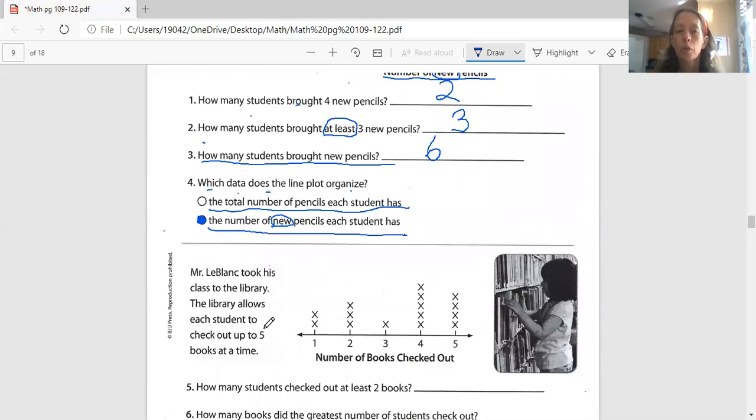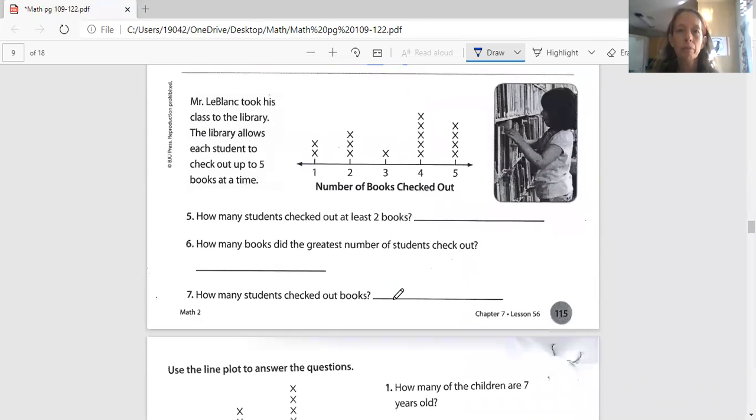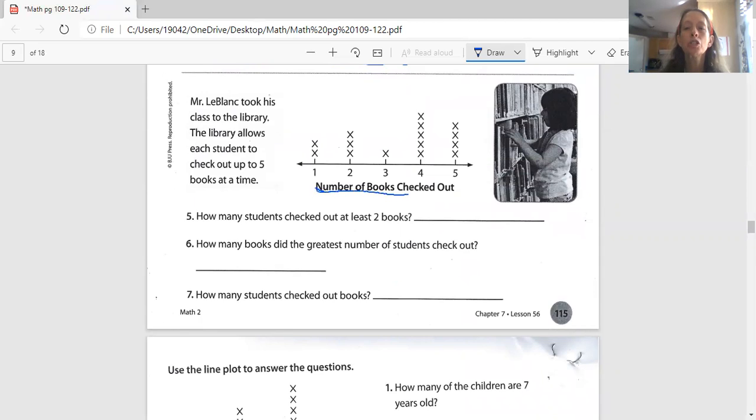And now we're down to a different one. So if you need to, if you're not finished with this part, go ahead and stop the video, finish up this part, and then come back to the next one. And let's read the next one. It says, Mr. LeBlanc took his class to the library. The library allows each student to check out up to five books at a time. And the title of the line plot is number of books checked out.